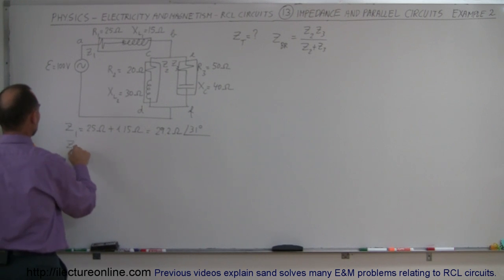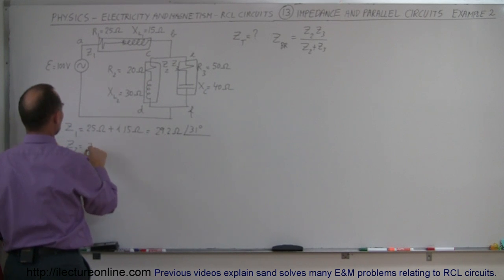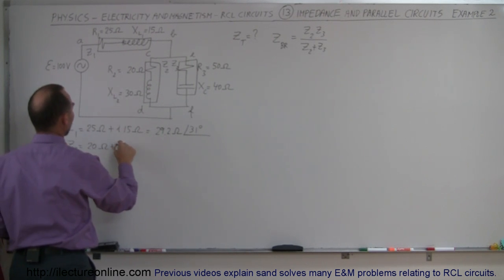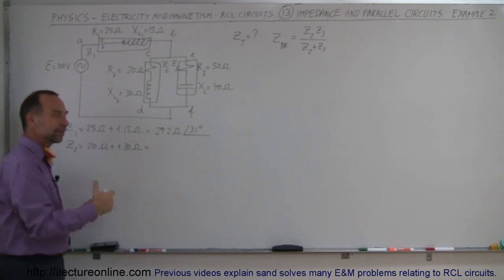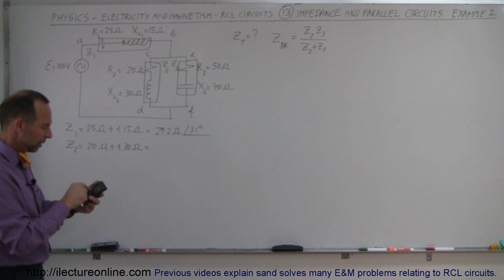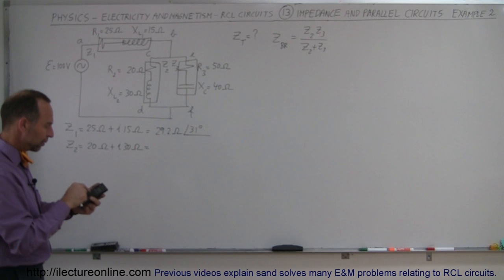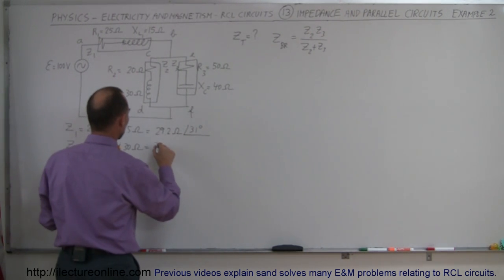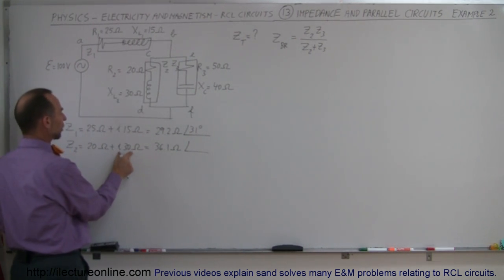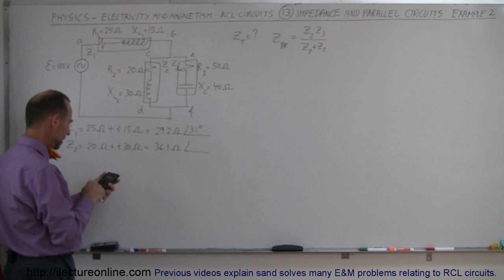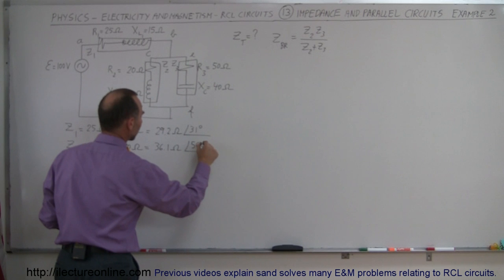Z2 is equal to 20 ohms plus j30 ohms — again an inductor. In magnitude form: square root of 20 squared plus 30 squared equals square root of 1300, which gives 36.1 ohms. The phase angle is positive because it's an inductor: arc tangent of 30 divided by 20 gives 56.3 degrees.